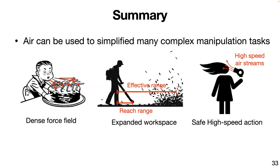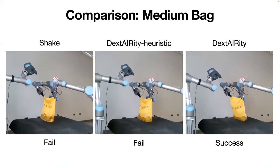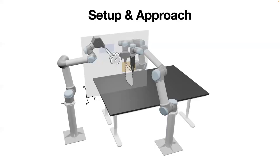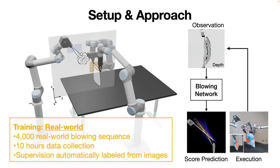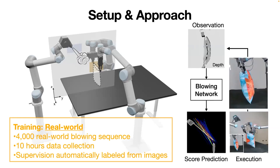Q: When training the bag opening task in the real world, you sample different blowing angles, run the air pump, and use a classifier to determine whether that leads to success — training just the score network. You only trained on one bag and it generalizes? A: Yes. Q: How long does the data collection take? A: Data collection takes a long time — I believe it's 10 hours. We collect around 4,000 samples, so essentially overnight data collection.